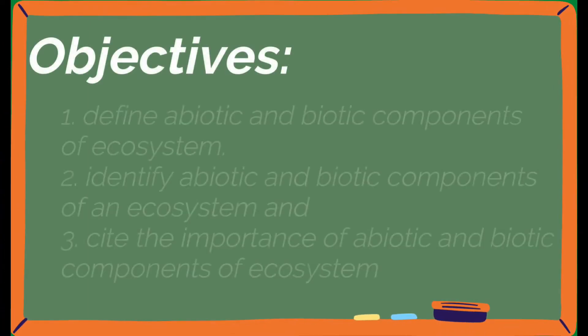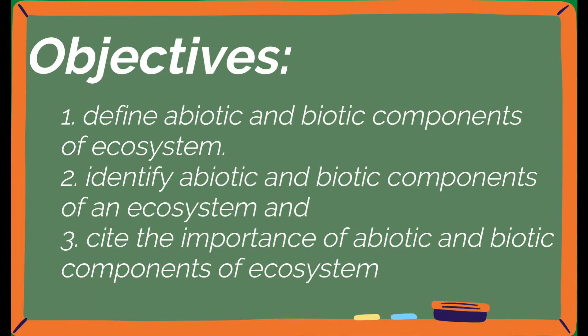Our objectives for today's lessons are: number one, define abiotic and biotic components of ecosystem; number two, identify abiotic and biotic components of ecosystem; and number three, cite the importance of abiotic and biotic components of ecosystem.